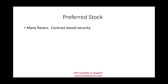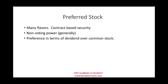Preferred stock is a contract-based security, so you can put anything in that contract. It's between the issuing company and the investor. Generally speaking, preferred stock is non-voting stock — if you own preferred stock, you cannot vote and are not a true owner. Preferred stock is called preferred because holders have a preference in terms of dividends. When the company pays dividends, any money declared first satisfies the preferred shareholders, and anything left goes to the common shareholders.